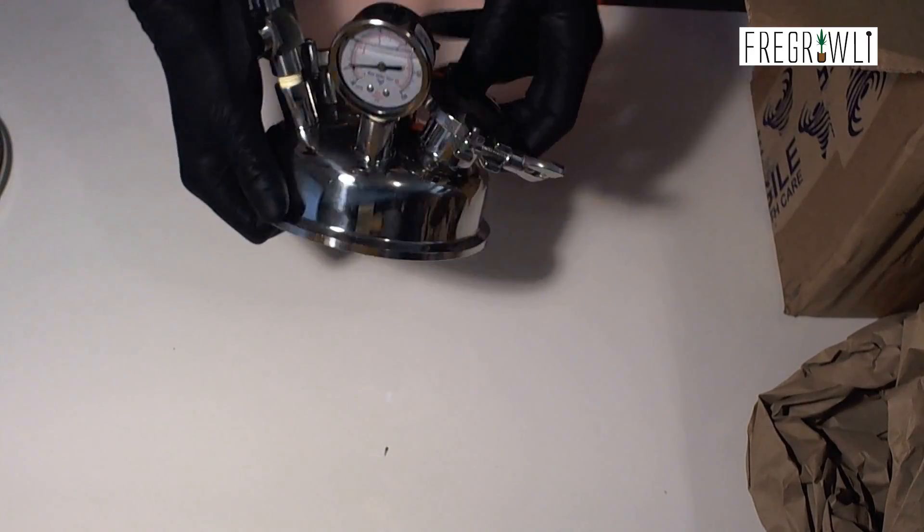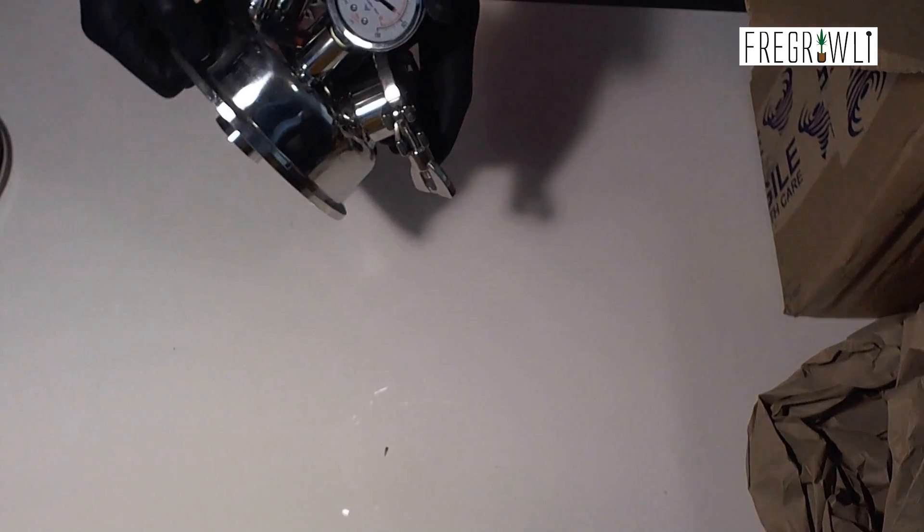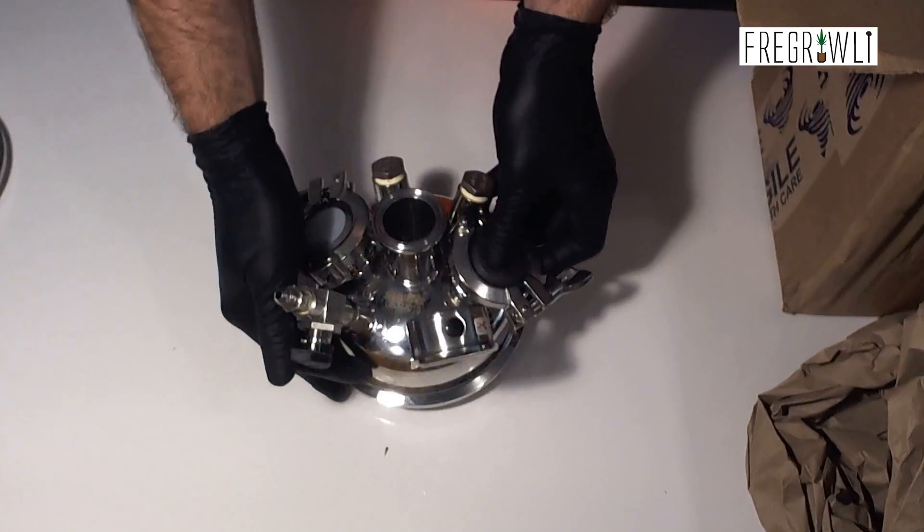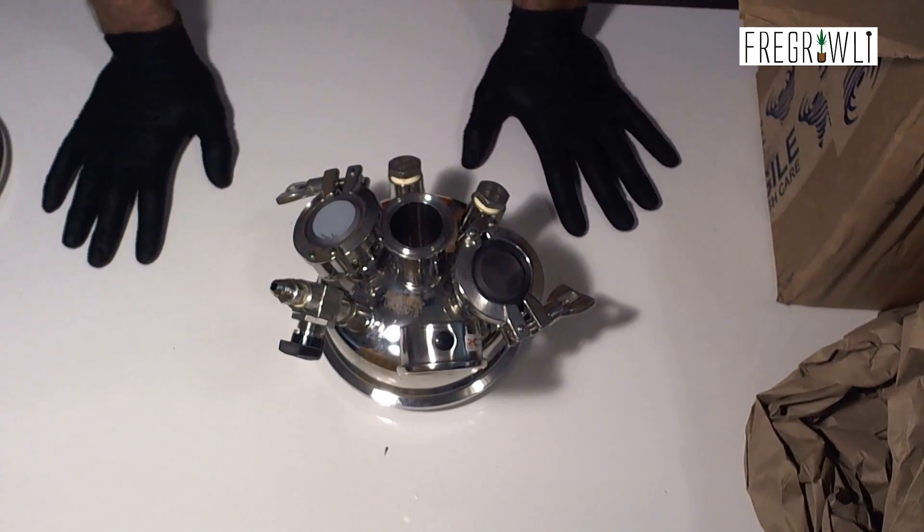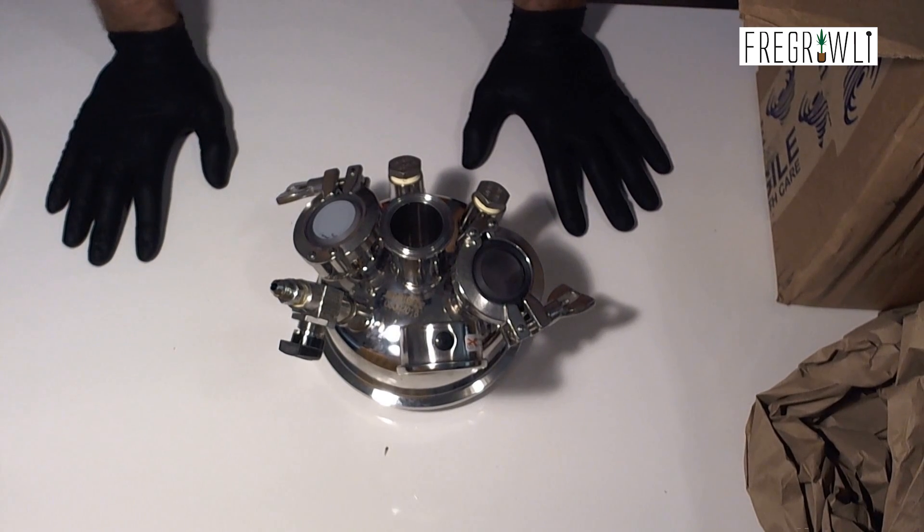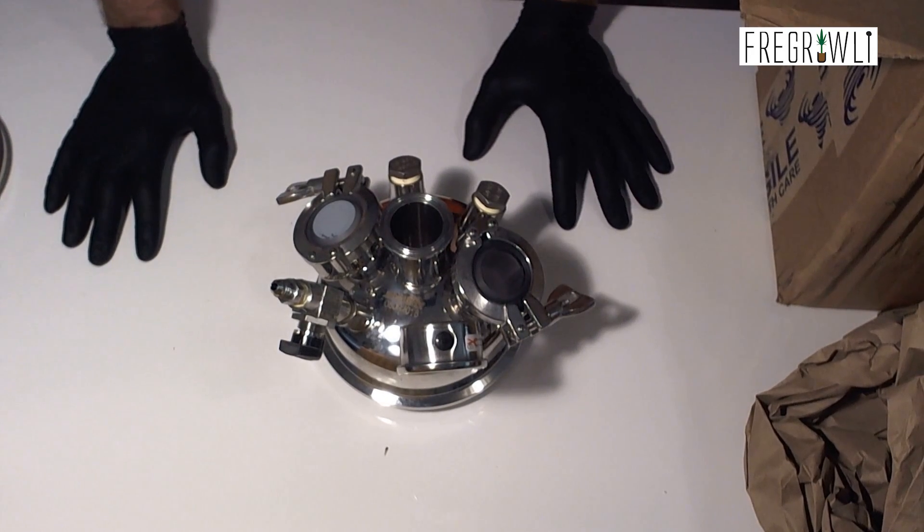You could remove those and put other things on for other upgrades. You've got your port here which is your recovery valve, and then of course your gauge right here which goes from negative 30 hg all the way up to 150 psi.